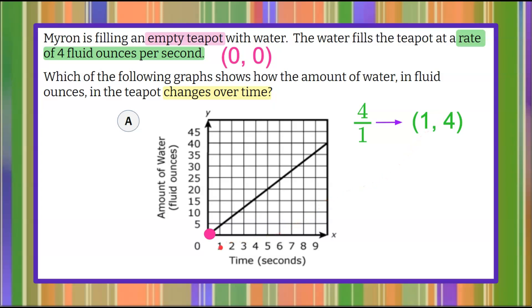Let's check that on our graph. One second up to the line, four, that's four fluid ounces in the pot. So that checks.